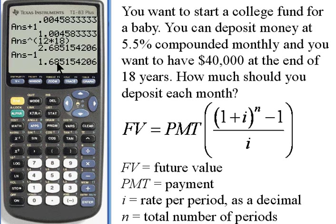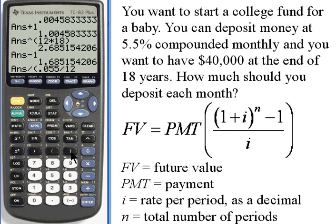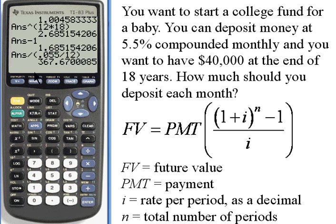I get 1.685. I want to take that number and divide it by i. I'll divide the answer by — using parentheses — i, which is the interest rate per year (0.055) divided by the number of periods per year (12). That gives me 367.67.